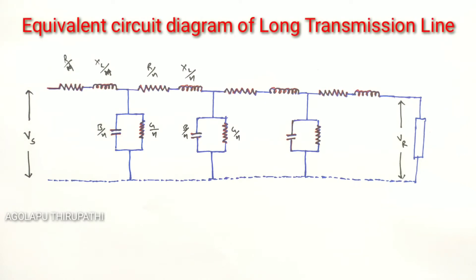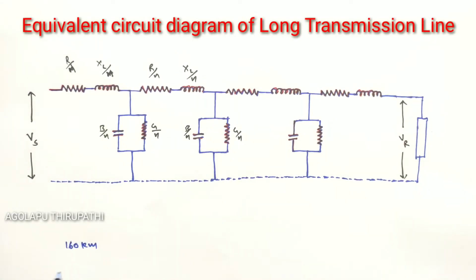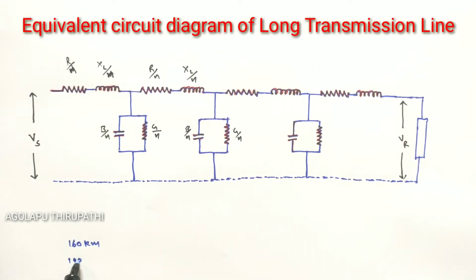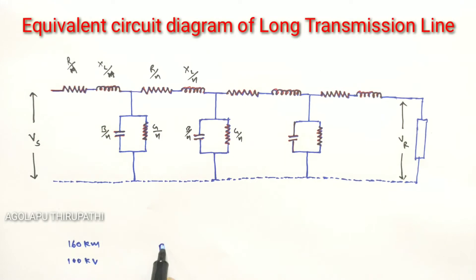Hi everyone, welcome to my YouTube channel. In this video I am going to explain about long transmission lines. In a long transmission line, the effective length is more than 160 kilometers and the voltage range is above 100 kV. We know that the transmission line constants like resistance, inductance,